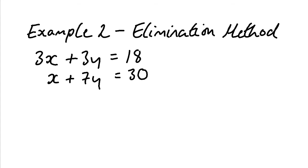The second example I'm going to show you involves the elimination method. The first thing I'm going to do is label my equations — the top one as equation number one and the bottom one as equation number two. When you deal with the elimination method, you need to decide which variable you want to eliminate — either x or y. I tend to eliminate the y variable first and get the value of x.